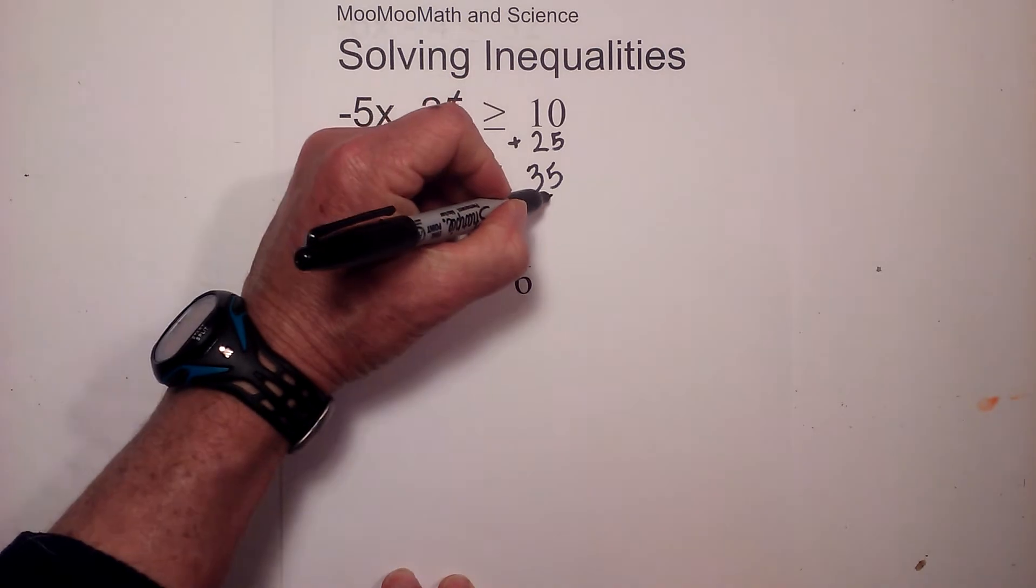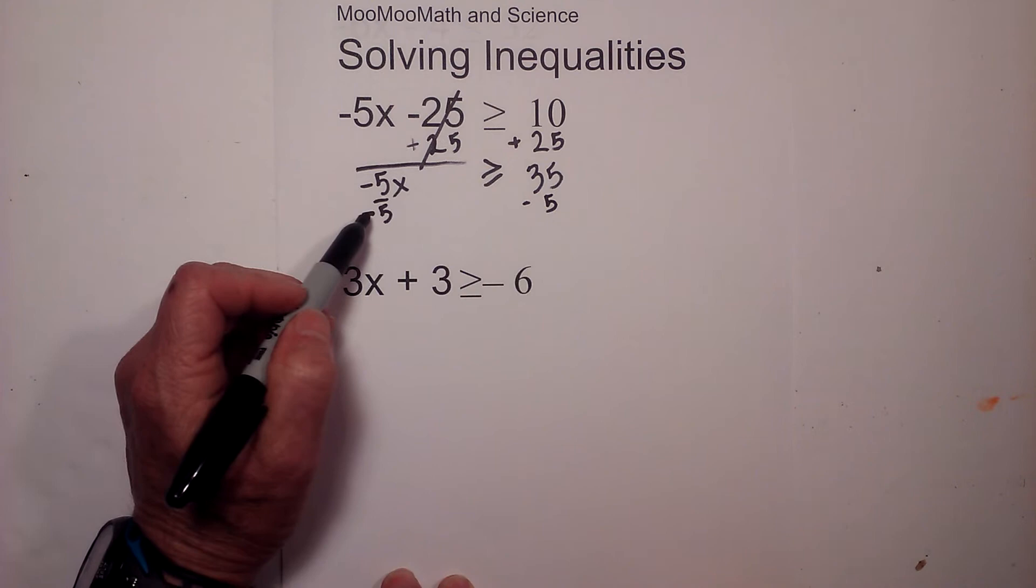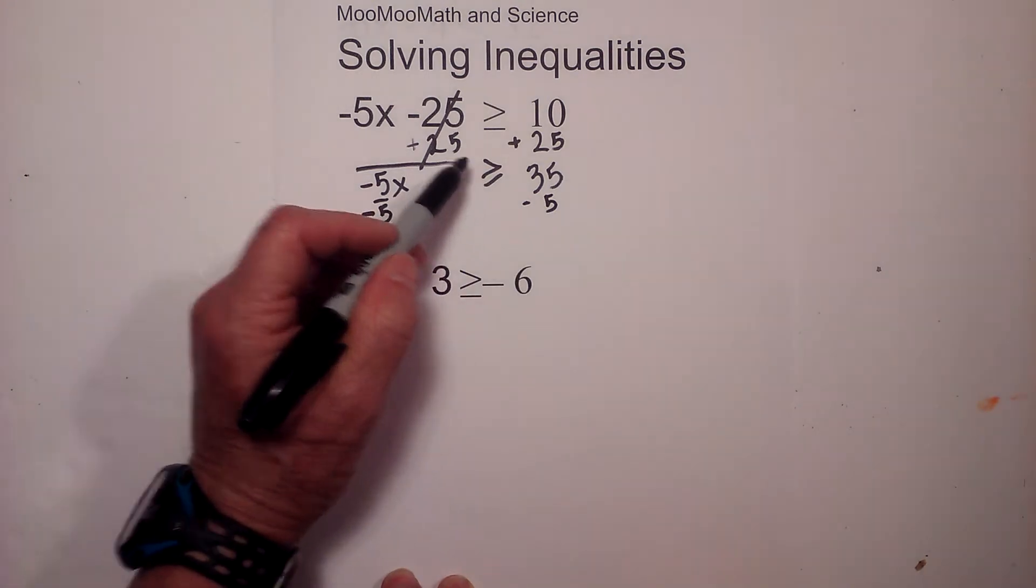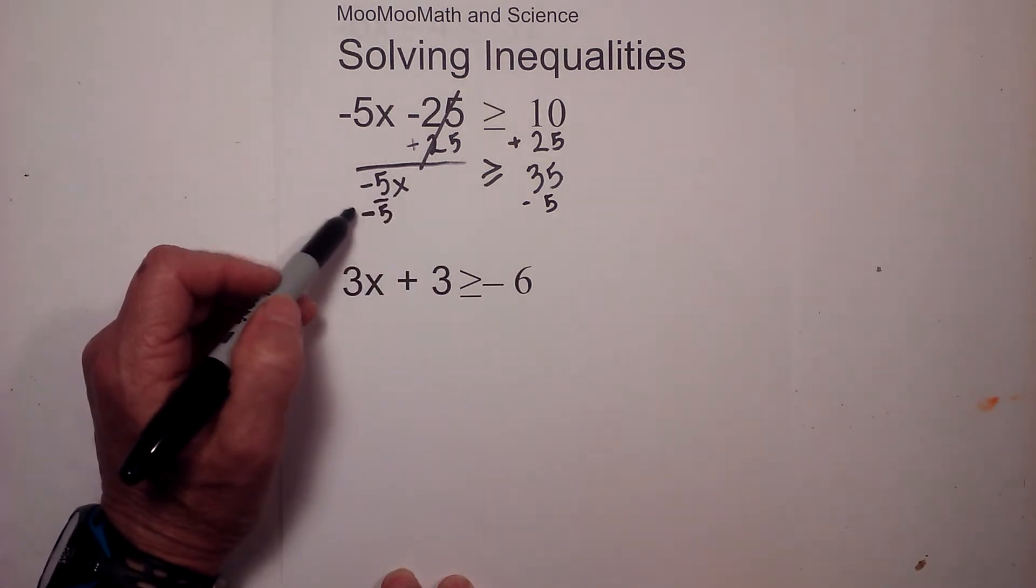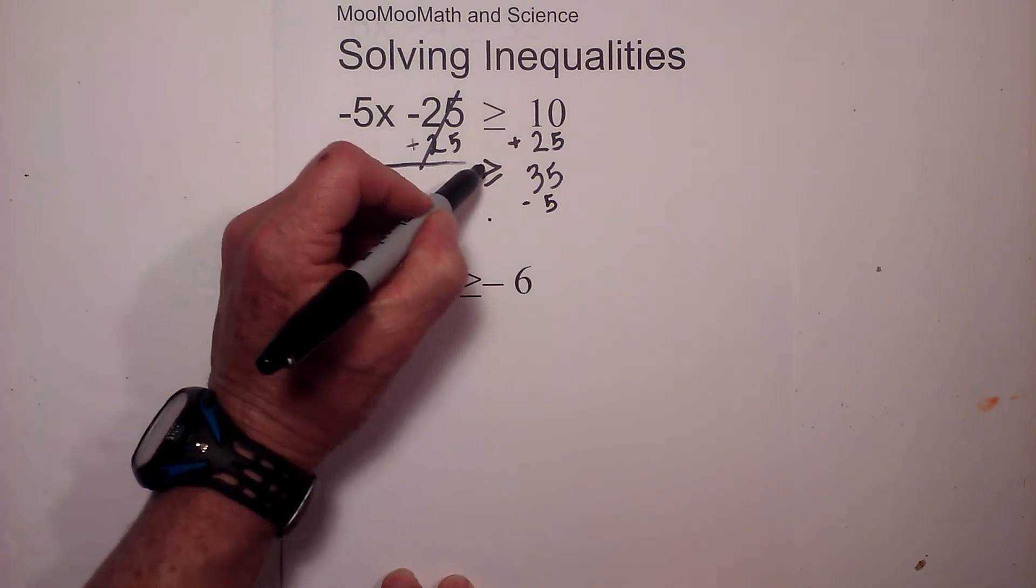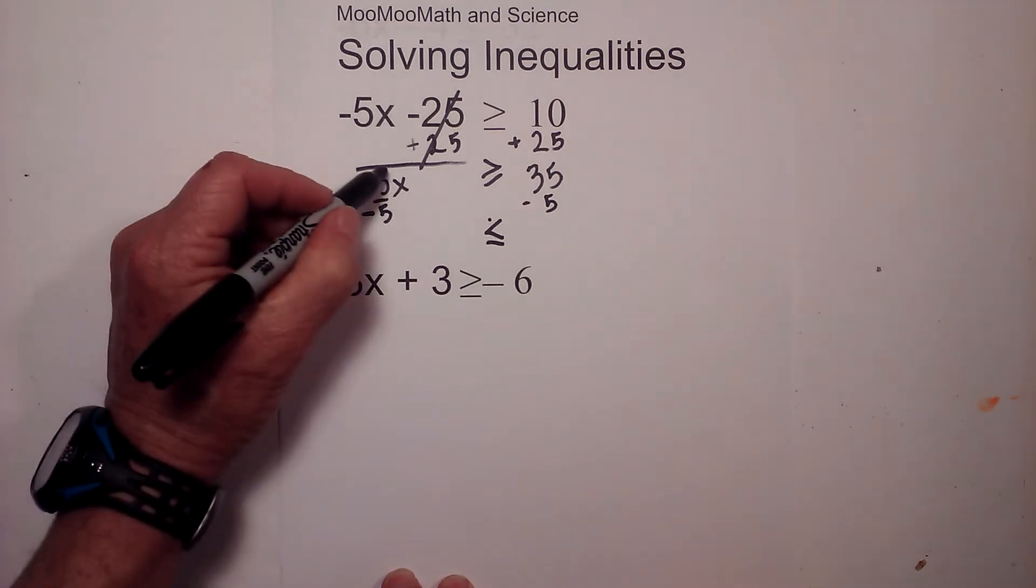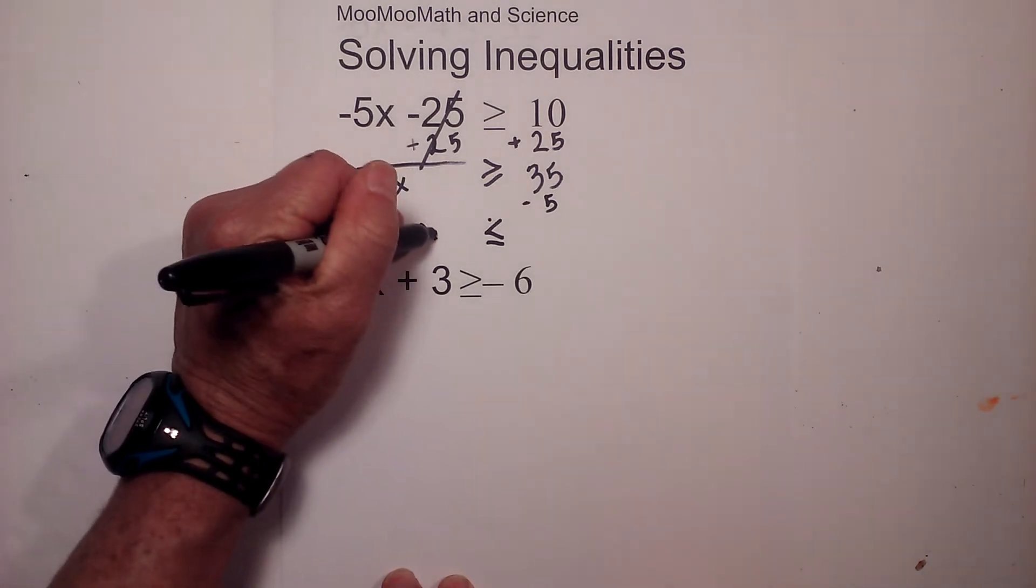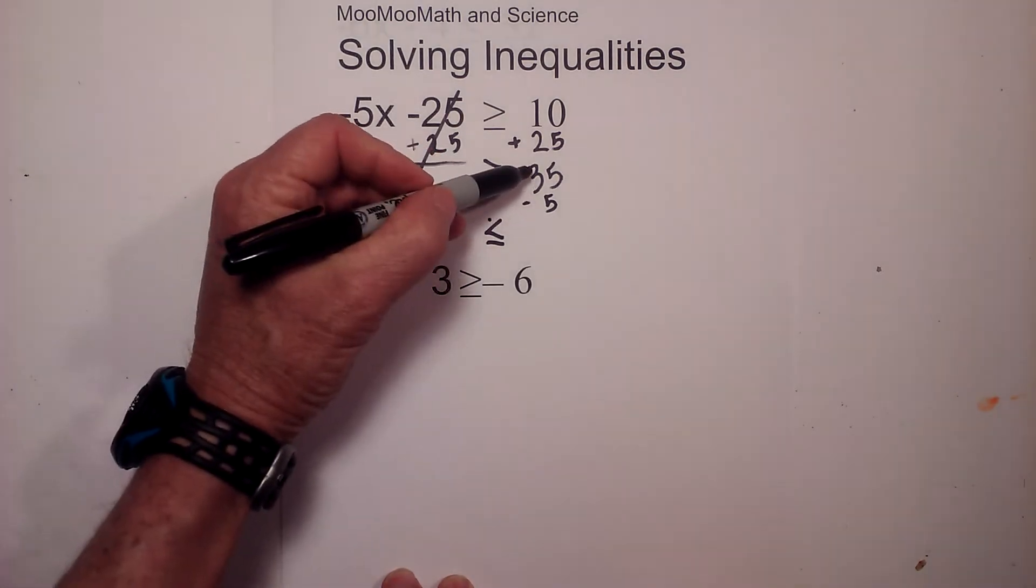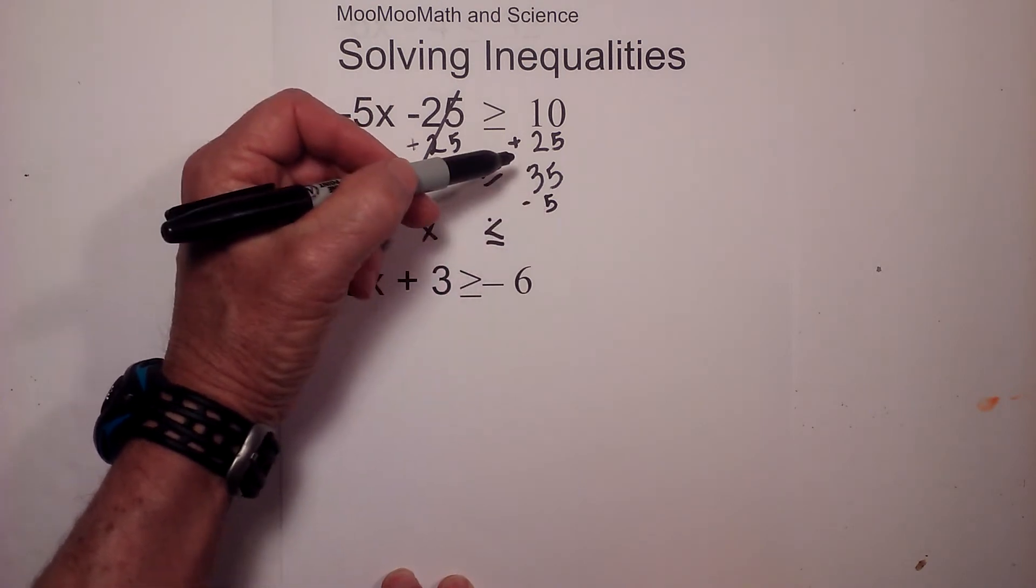Here's where you need to remember: anytime you multiply or divide with inequalities with a negative number, you switch the sign. So I'm going to switch the sign from greater than or equal to, to less than or equal to.